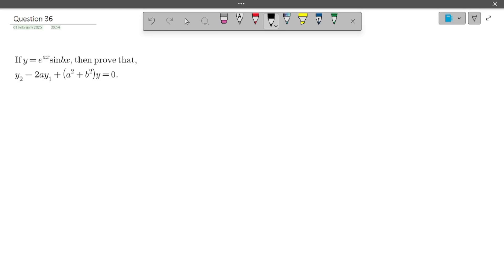Today we will solve this question: if y equals e to the power ax into sin bx, then prove that y₂ minus 2ay₁ plus (a² + b²) into y equals 0.